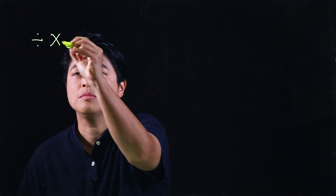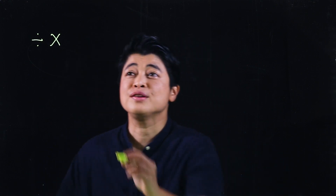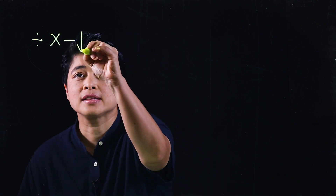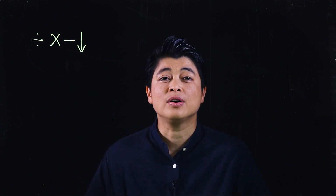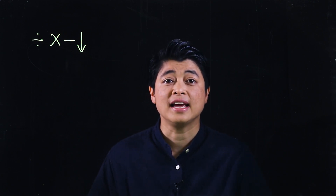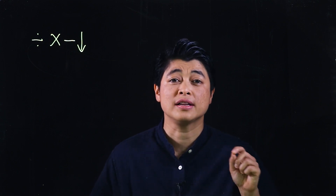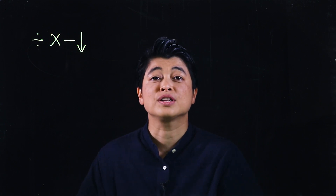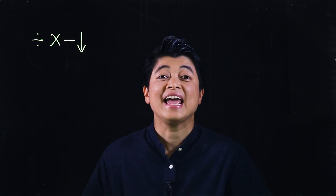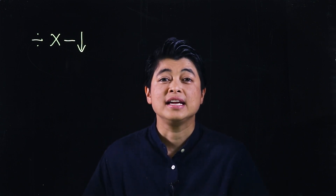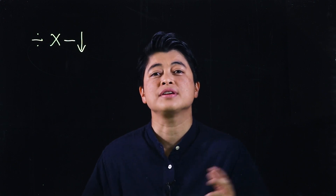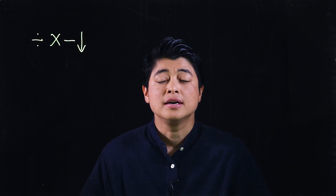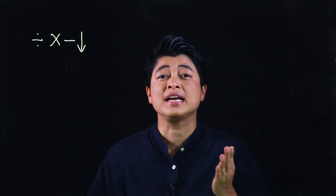After you divide, you multiply; after you multiply, you subtract; and after you subtract, you bring down. The process is repeated depending on how large the dividend is. The dividend is what you are dividing, and the divisor is what you're dividing by. The answer is the quotient. If there's no remainder, it's a simple division.